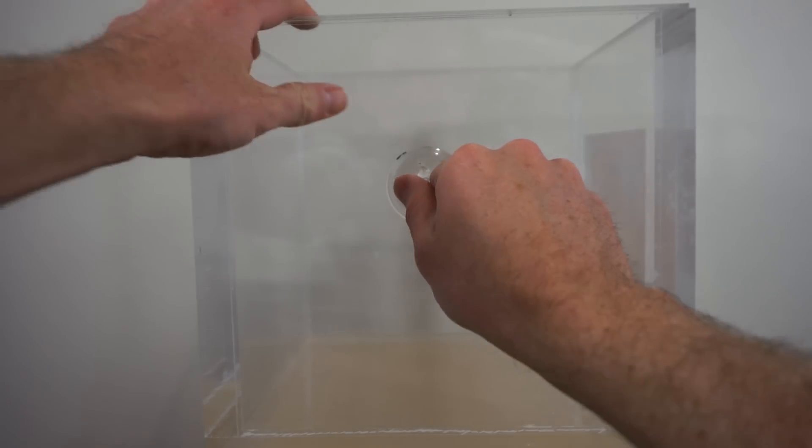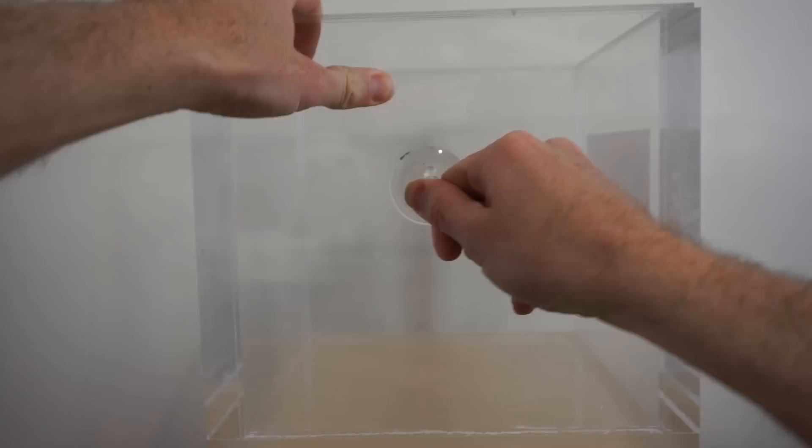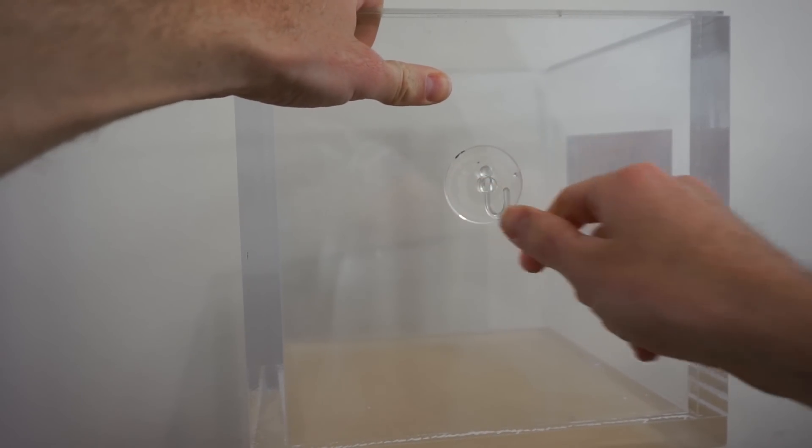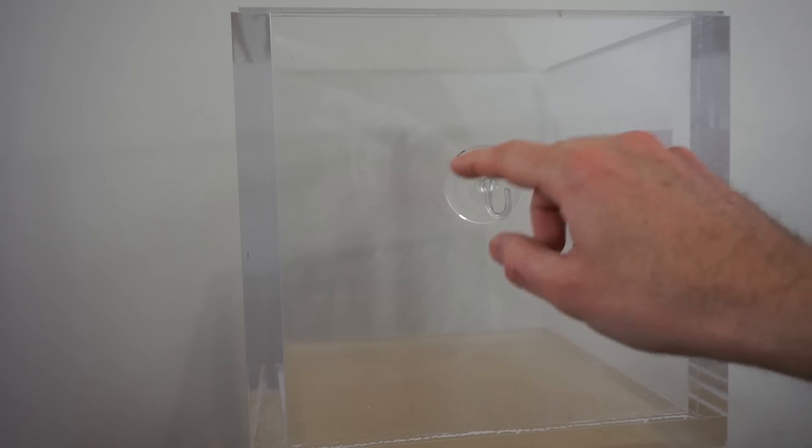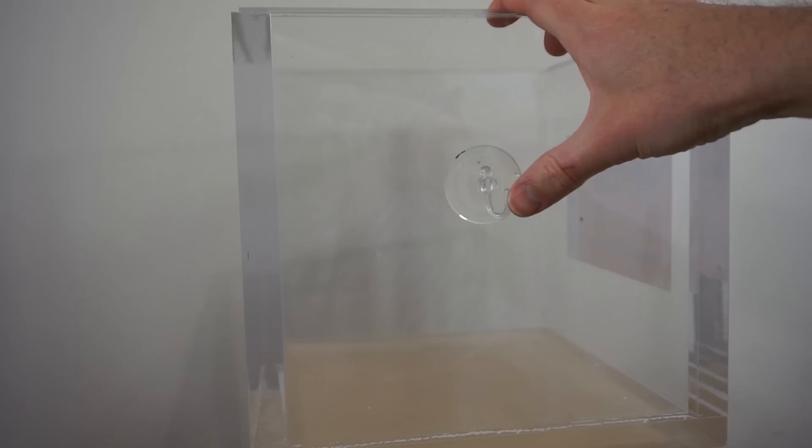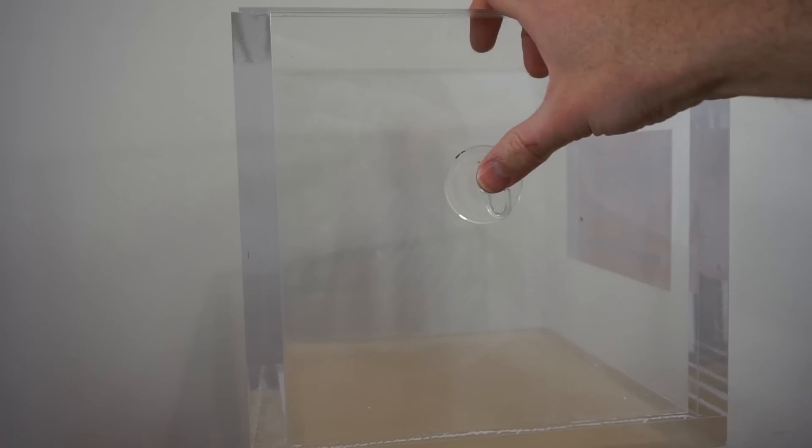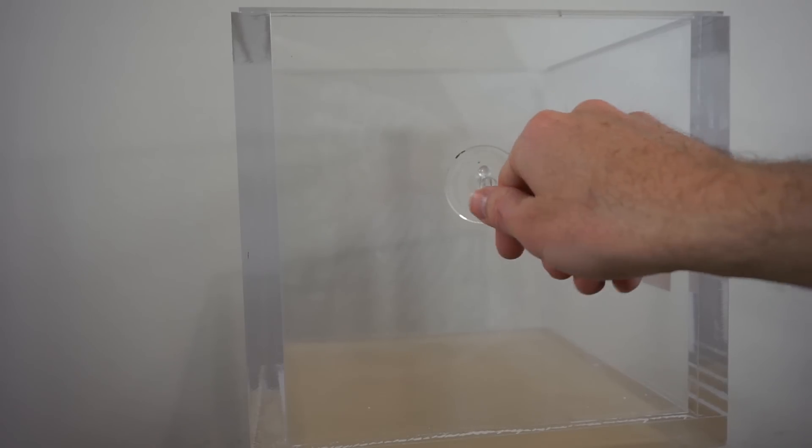Even if you try to pull it off, see with pretty good force I'm trying to pull this, and I can't get it off, because this surface area is pretty big, and the atmospheric pressure is putting a good force on it, and so I can't pull it off the chamber.